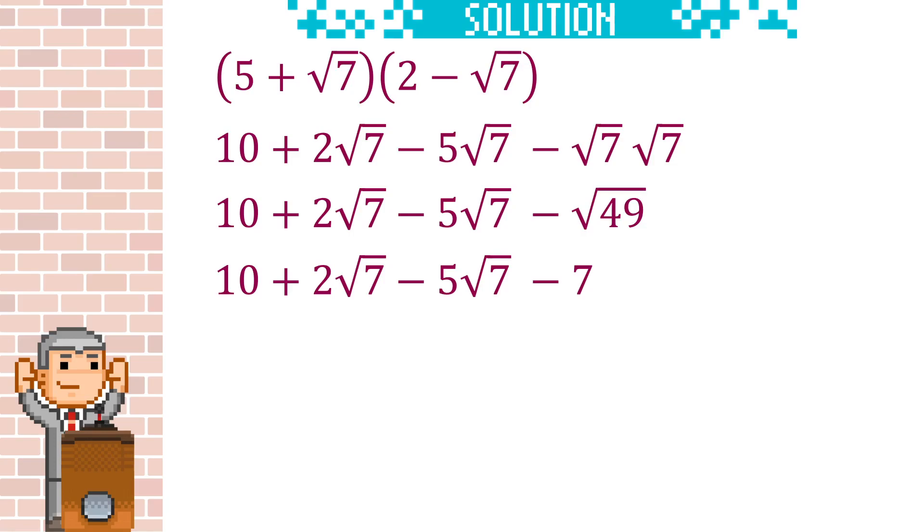Now we've got our like terms here. We've got plus 2 root 7 minus 5 root 7, so that will give us minus 3 root 7. And then we've got the 10 take away the 7, which will give us 3. And you can't simplify this any further.